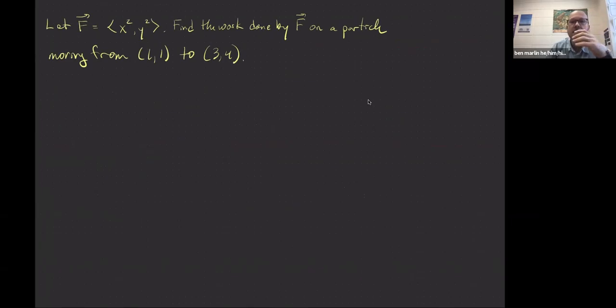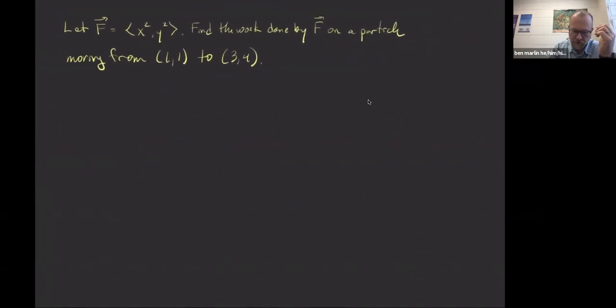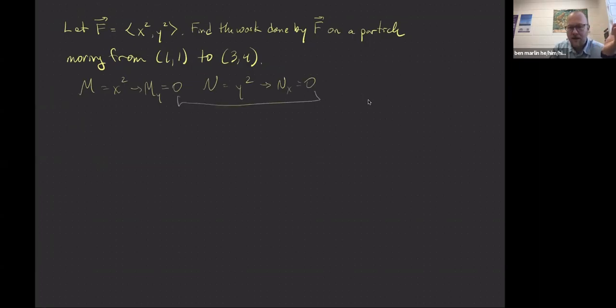So this one is just phrased differently, and it's got a force field on it. Since I'm a sci-fi fan, make the jokes that you want to make. But you take your force field, and you're asked to find the work done by f on a particle moving from 11 to 34. So this time, because you've got something that's two-dimensional, we would think about our m being x squared and our n being the y squared. And then we would say that the m sub y is going to be equal to 0, and the n sub x is going to be equal to 0. Because those match up, then we have the f being conservative.